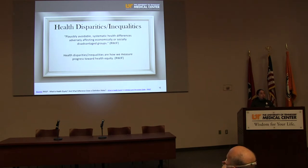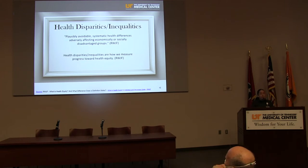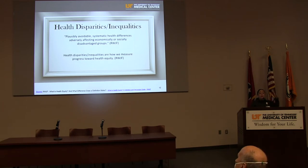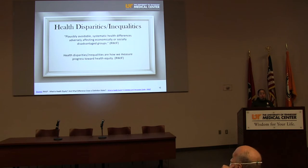The first concept I'll be using throughout this presentation comes from the framework developed by the Robert Wood Johnson Foundation. Health disparities or health inequities — both terms can be used interchangeably — are plausibly avoidable, systemic health differences adversely affecting economically or socially disadvantaged groups. Health disparities or inequities are how we measure progress towards health equity. Health equity is our final goal, and the only way we have to measure advancement on social and health equity is by measuring whether we reduce the disparities in the community.